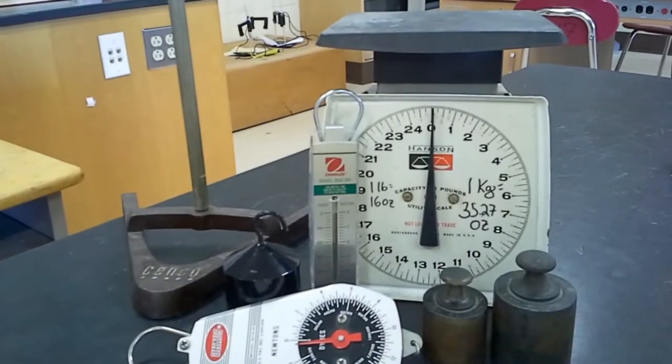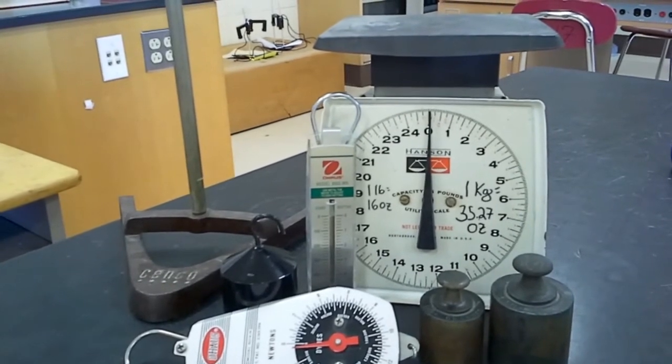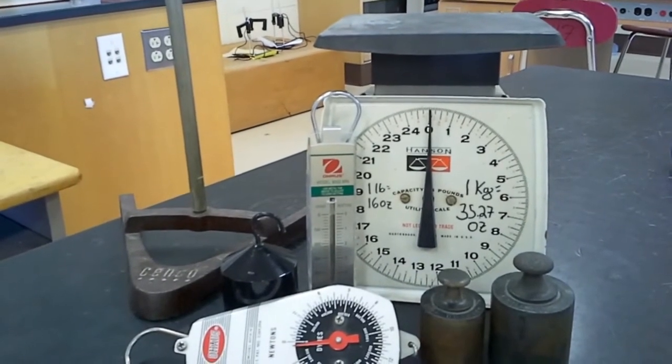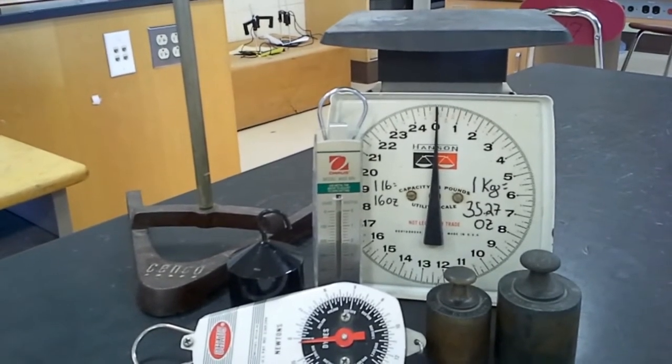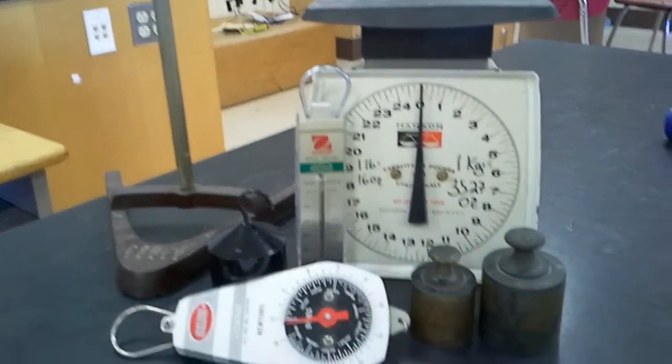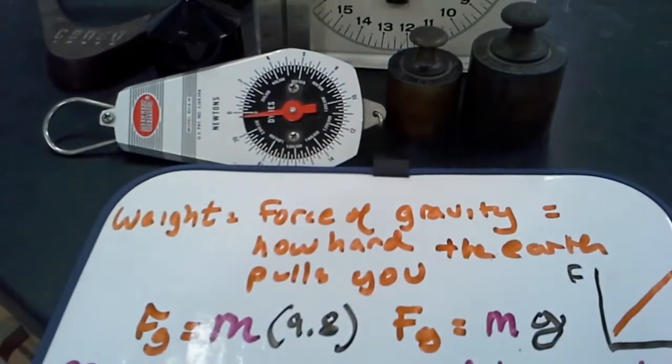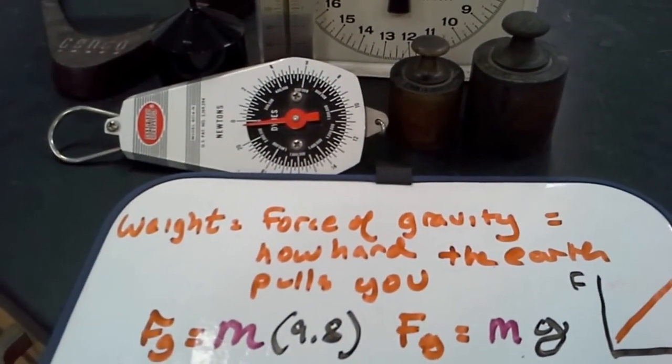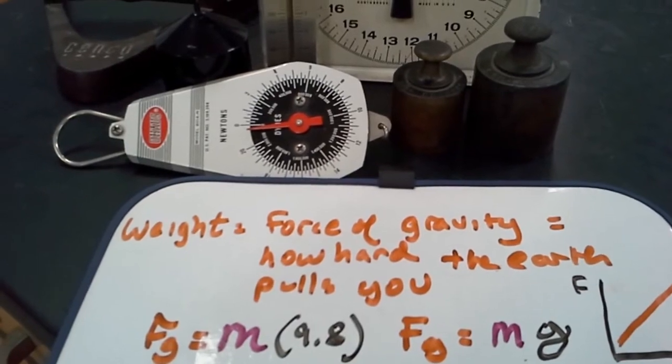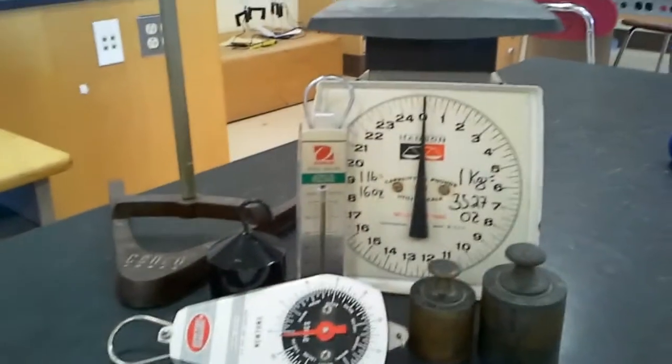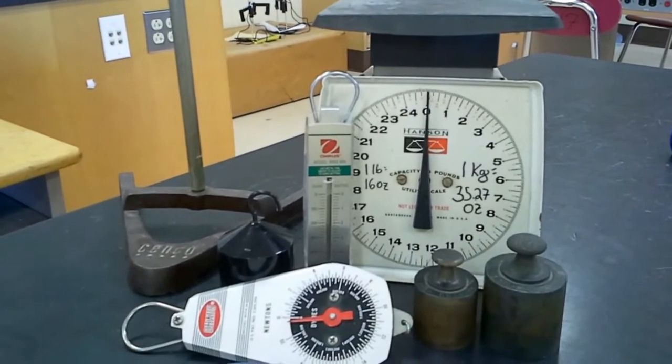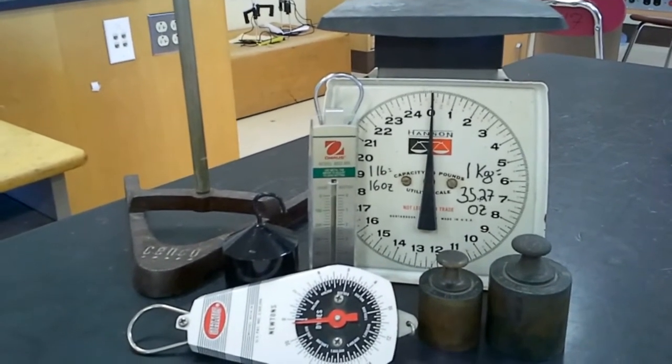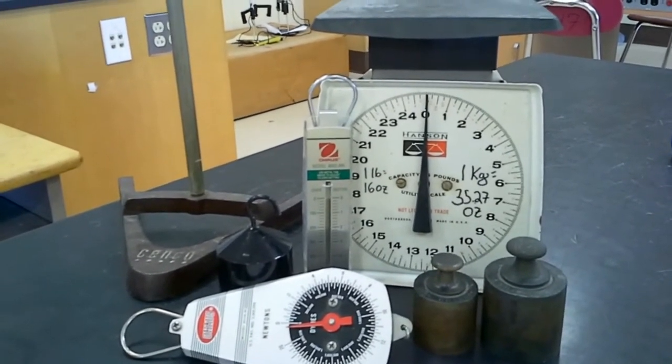The bottom line is, whether we're measuring mass or weight, in reality on Earth, we're always measuring weight. The scales are always measuring how hard the Earth is pulling these objects. Because mass and weight are directly proportional on Earth, the force of gravity equals the mass times 9.8. You just have to change the numbers on the dial, whether you're going for mass or whether you're going for weight.